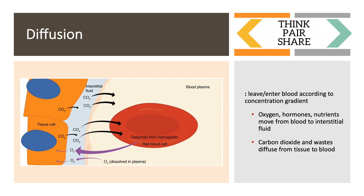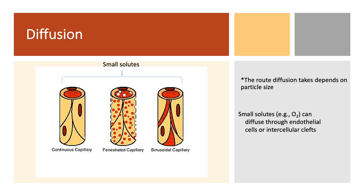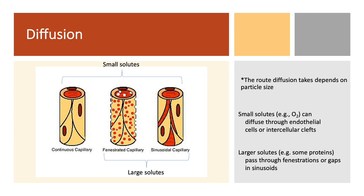For a think-pair-share, think about what would be the differences between how small solutes diffuse versus larger solutes and the different pathways they could take. The route taken depends on particle size. Really small solutes like oxygen, CO2, glucose, or different ions can diffuse right through the endothelial cells or through those intercellular clefts. Larger solutes pass through fenestrations in fenestrated capillaries or the gaps in sinusoidal capillaries — this includes larger solutes or small proteins.